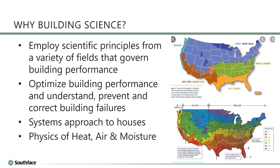Here's a slide about building science and different climate zones. We're trying to use the principles of heat, air, and moisture to design and operate high-performance buildings. The top map shows climate zones ignoring political boundaries, and the bottom one blends that with geopolitical divisions. The county-based version comes from the energy code and is easier to enforce.